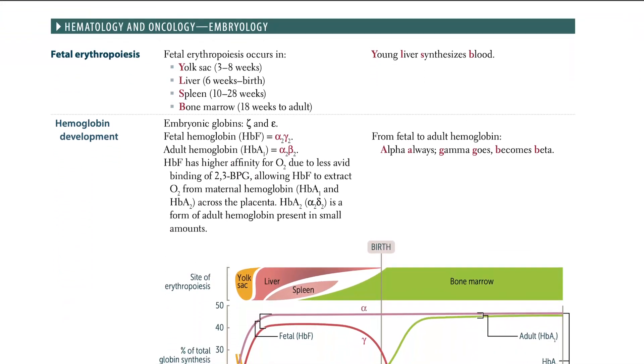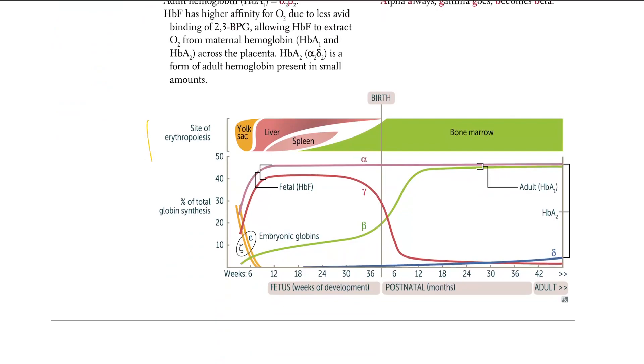Let's go with embryology. Fetal erythropoiesis. Fetal erythropoiesis occurs in the yolk sac, the liver, the spleen, the bone. And this is way better if you just look at this picture here.